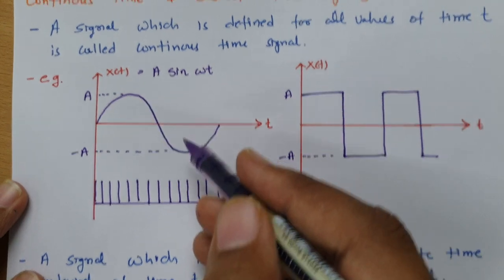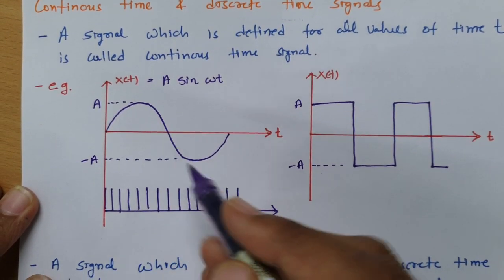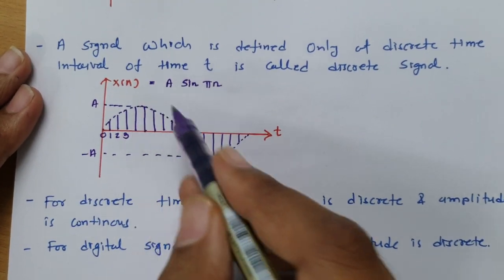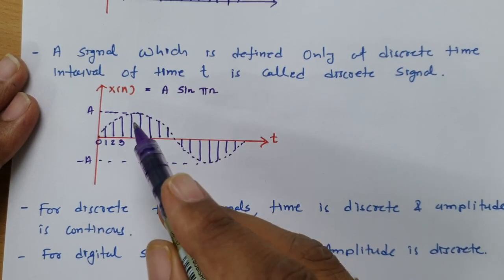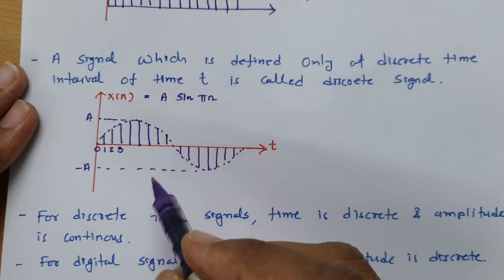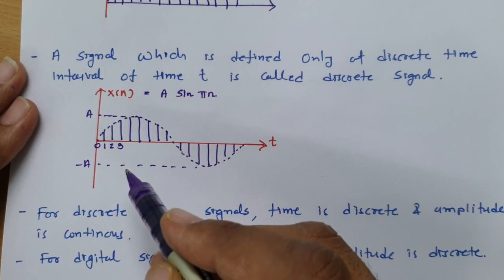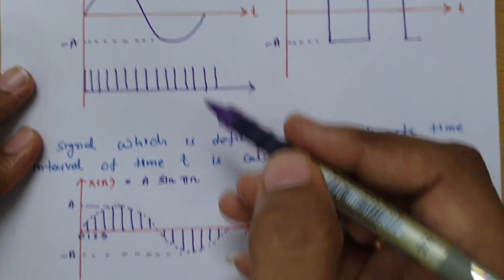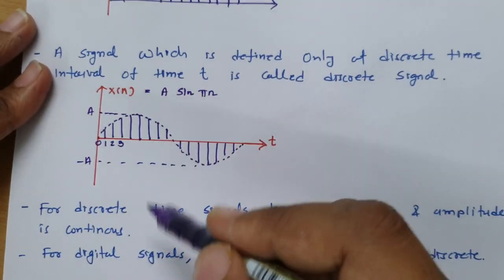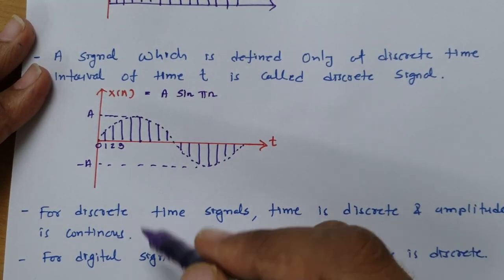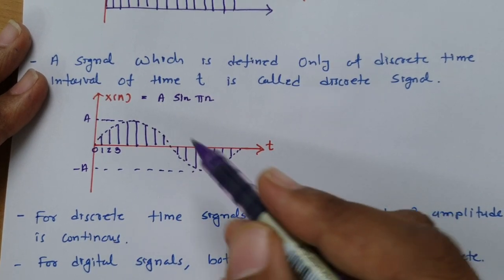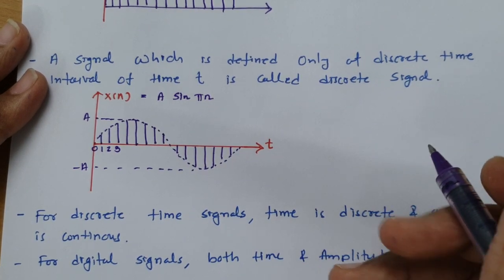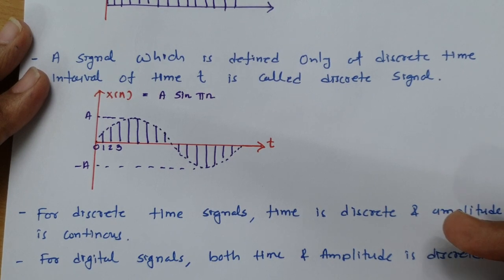In summary: a continuous time signal has amplitude values at all time intervals; a discrete time signal has values only at discrete time intervals; and for a digital signal, both amplitude and time are discrete. To get a discrete signal we do sampling, multiplying an impulse train with the continuous signal. To get a digital signal we additionally do quantization. I hope you have understood this session. Thank you so much for watching.